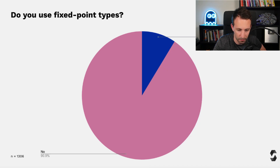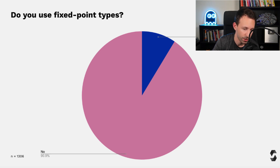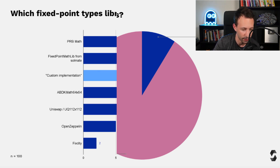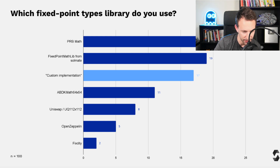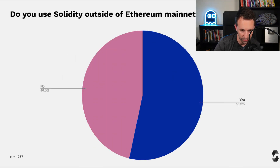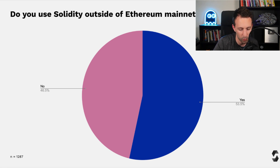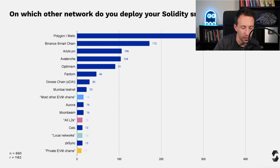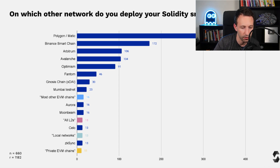Do you use a fixed point type? Most people don't. That feature is for those who want to use decimal numbers in Solidity, and currently you need a library to do that — there are several available if you need them. For blockchain usage, 53% of developers use Solidity outside of Ethereum mainnet and testnet. Among other blockchains, Polygon/Matic is on top, followed by Binance Smart Chain, Arbitrum, Avalanche, and Optimism.